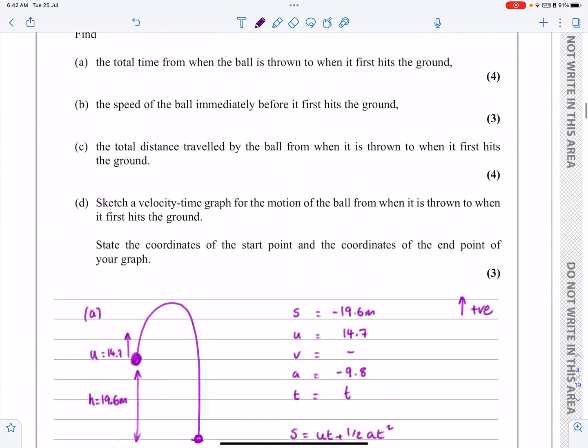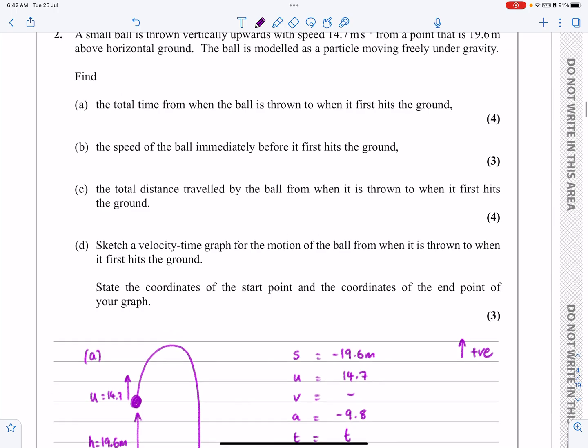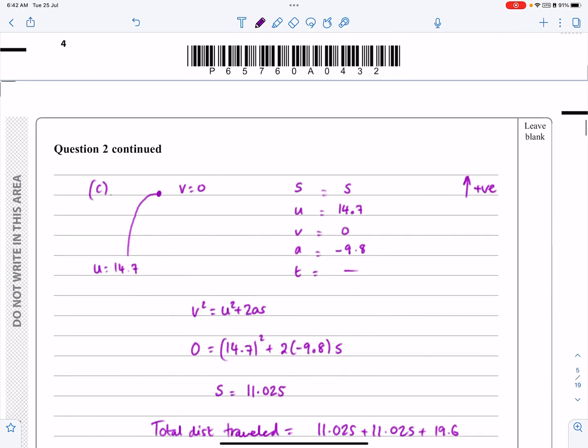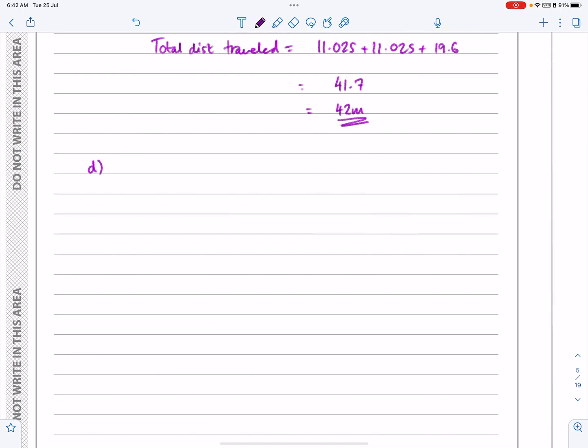Okay. That was part C. Okay. Part D then. Sketch a velocity time graph for the motion of the ball when it is thrown to when it first hits the ground. State the coordinates of the start point and the coordinates of the end point of your graph. Okay. So yeah. This sometimes confuses people who are not as strong at kinematics as they should be. This is really straightforward. Because throughout the whole of this motion, we've just had a constant acceleration, haven't we? The constant acceleration has been a deceleration of minus 9.8. But if we've got a velocity time graph and we have a constant deceleration, we're just going to have that.